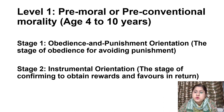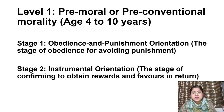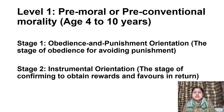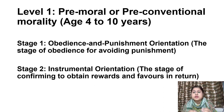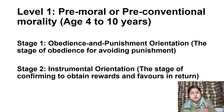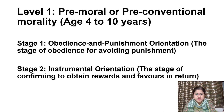For example, an action is perceived as morally wrong because the person doing it is punished. The worse the punishment for the act, the more bad the act is perceived to be. This is the essence of Stage 1 under Level 1.